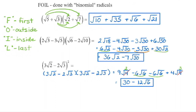Writing it out makes it easier to see. Multiply the first terms: 3 times 3 is 9, and 2 times 2 is 4 — a perfect square. Outside terms: 3 times negative 2 is negative 6, and the radicand 2 times 3 gives us 6. Inside terms also give negative 6 with radicand 6. Last terms: negative times negative gives positive, 2 times 2 is 4, and 3 times 3 is 9 — a perfect square. Square rooting 9 gives 3, and 3 times 4 is 12. Square rooting 4 gives 2, and 2 times 9 is 18. So 12 plus 18 is 30. Negative 6 minus 6 is negative 12, with the radicand staying the same. These are not like terms, so that is our final answer.